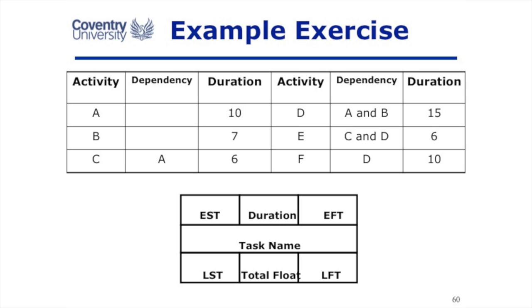So we did the dependencies in lecture three. What we now need to do is add in the durations for each task and change each of those nodes from just the task name to show the early start time, the early finish time, the latest start time, the latest finish time, and the float. So basically, we're taking our dependency chart and we're making it into a network diagram.